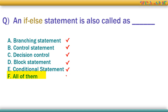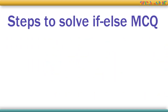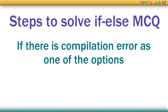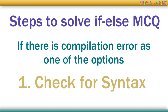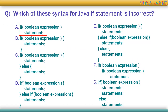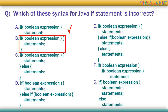All of these options are correct. If there is a compilation error as one of the options in your MCQs, the first thing you need to check is if the syntax of the if-statement is correct. If there is a single statement, you can directly write it without curly brackets, or enclose one or more statements in curly brackets. The statement will be executed only if the boolean expression is true.